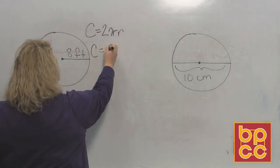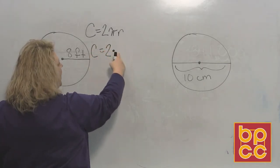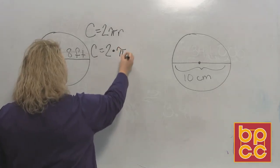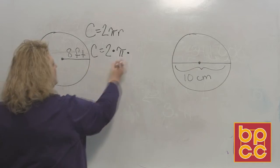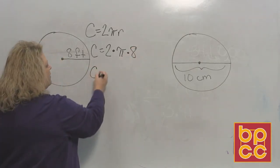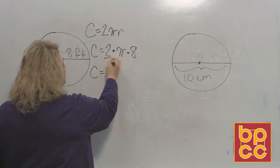So what do we do? We plug in the numbers that we know. Circumference is equal to 2, we know that, times pi. Since we want the exact value, we leave the pi symbol in there, times the radius. The radius is 8, so plug in what you know.